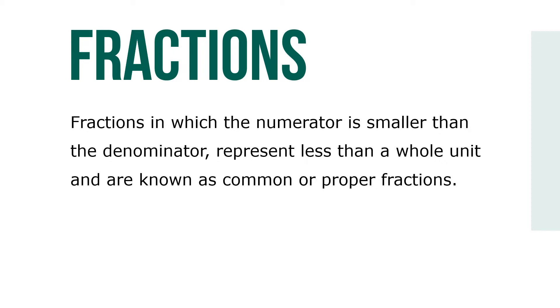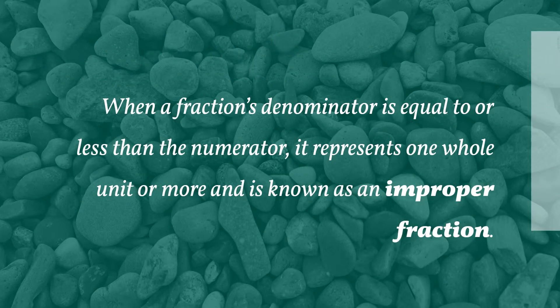Fractions in which the numerator is smaller than the denominator represent less than a whole unit and are known as common or proper fractions. When a fraction's denominator is equal to or less than the numerator, it represents one whole unit or more and is known as an improper fraction.